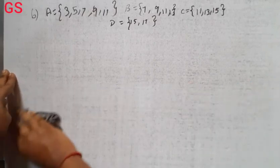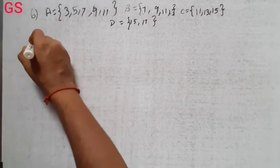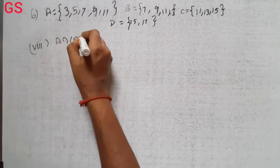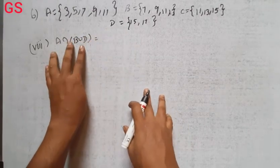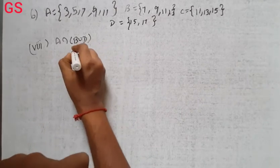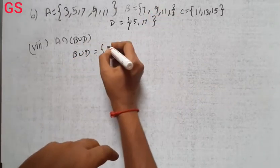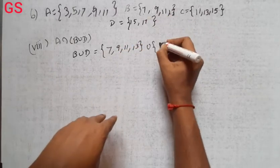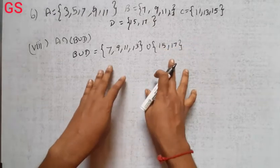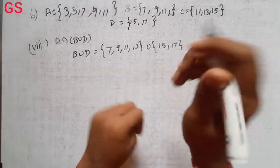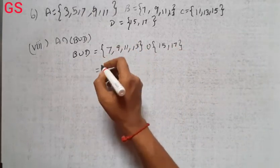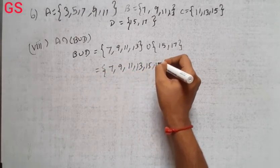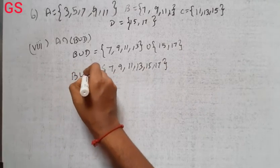Eighth subdivision: A intersection B union D. First, B union D. B has 7, 9, 11, 13. Union D has 15, 17. So B union D is 7, 9, 11, 13, 15, 17.